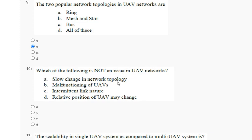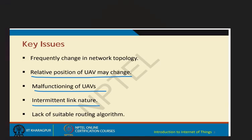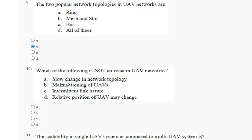Question ten: which of the following is not an issue in UV networks? Options: slow change in network topology; malfunctioning of UV; intermittent link nature; relative position of UV may change. The key issues are relative position of UV may change, malfunctioning of UV, and intermittent link nature. The correct answer for question ten is option A.